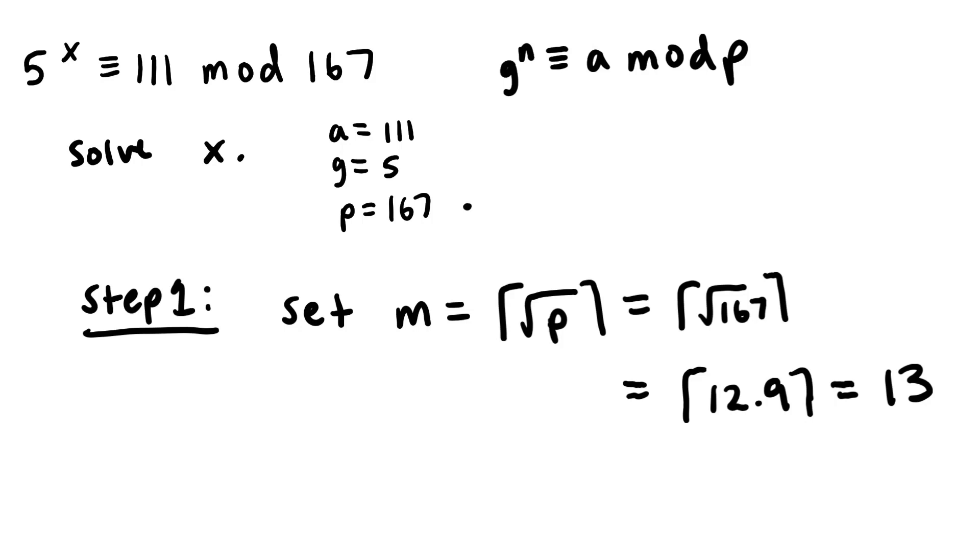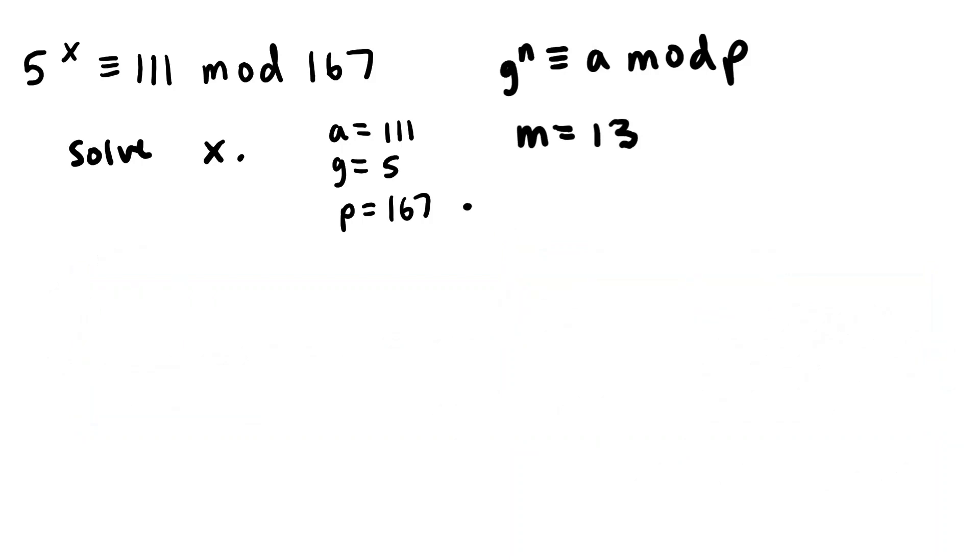So now that we have our m value, we can go to step 2. So actually, let's write down our m value here with all of our variables. We have m equals 13. And I'll get this out of the way. We can do step 2.